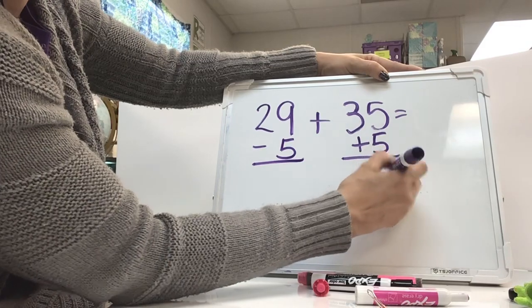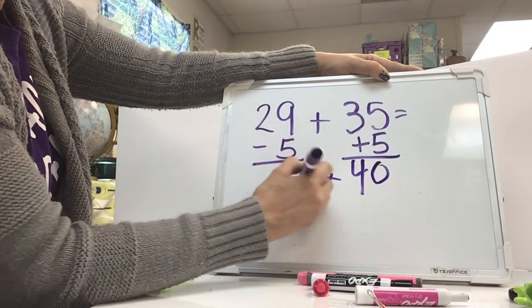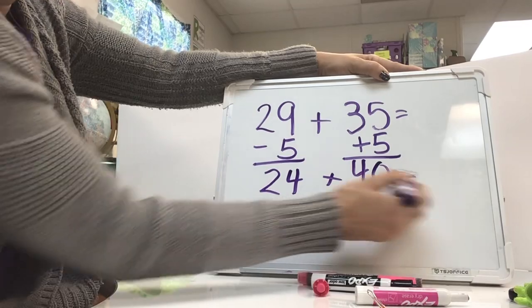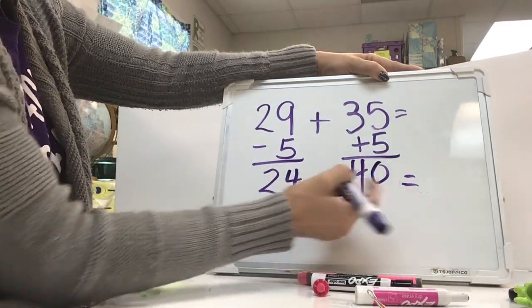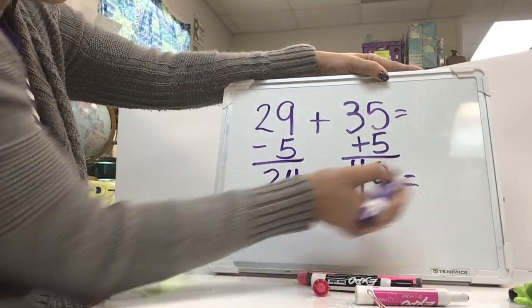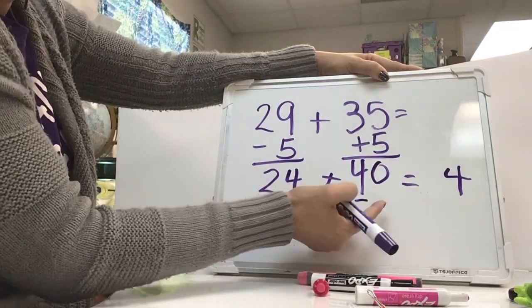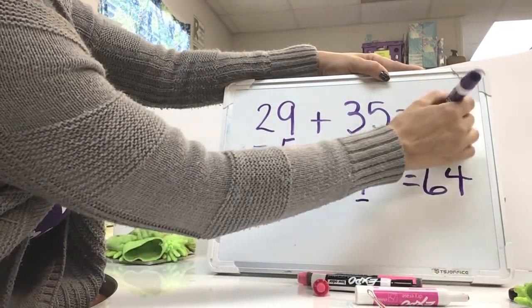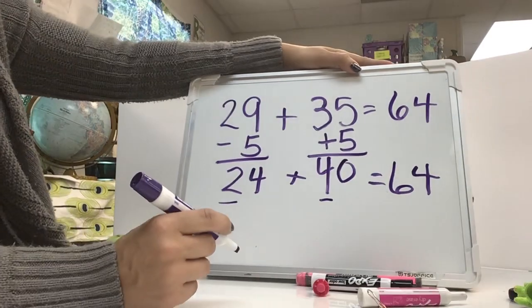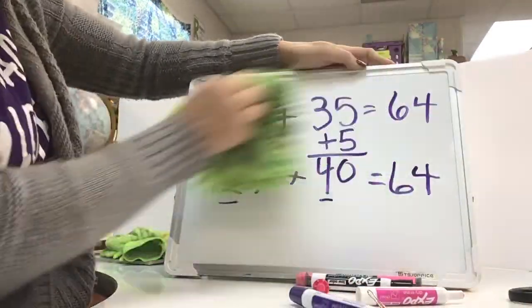35 plus 5 is 40. 9 minus 5 is 4. Bring that 2 down. 24 plus 40. I'm just adding 4 to my 10s place. So again, 2 tens plus 4 tens is 6 tens. And I did get the same sum of 64. So I know that my answer is correct.